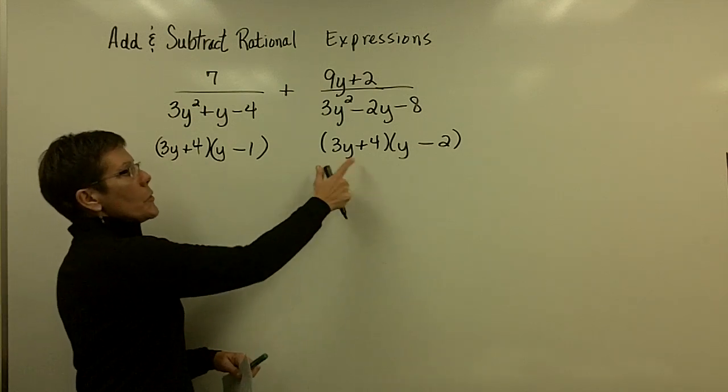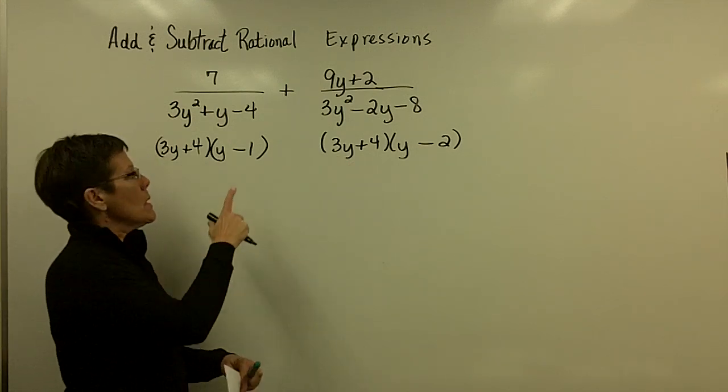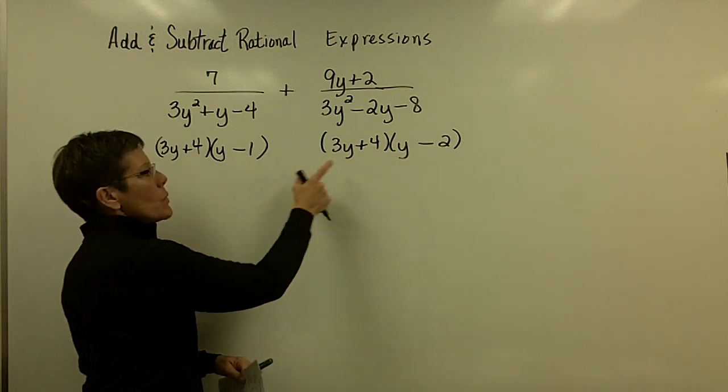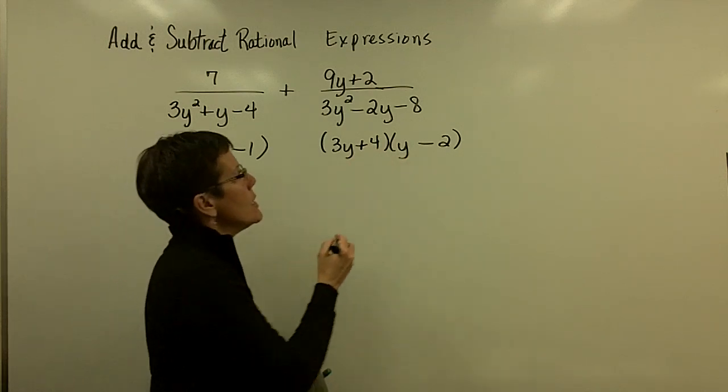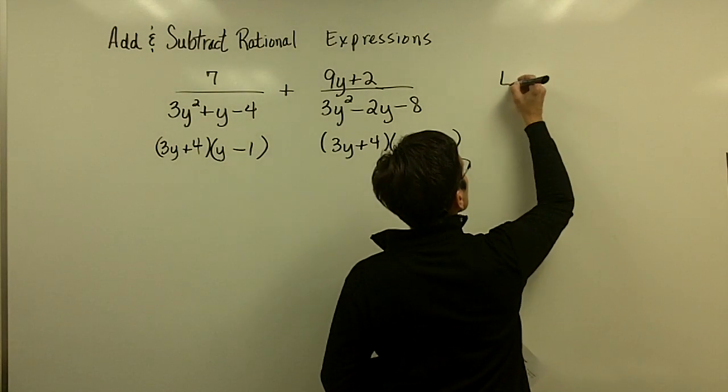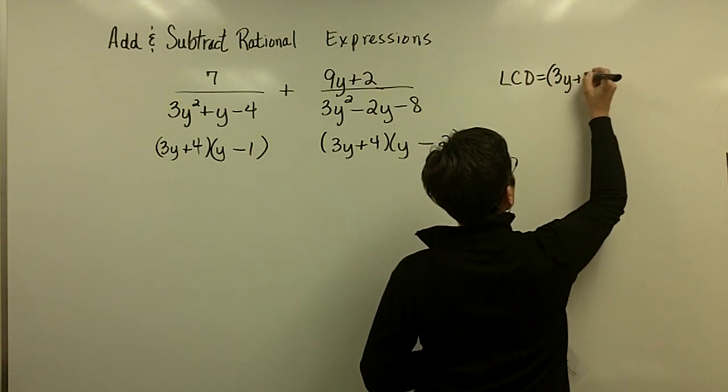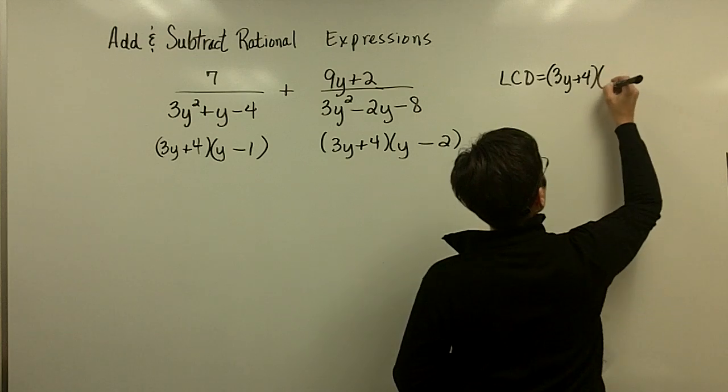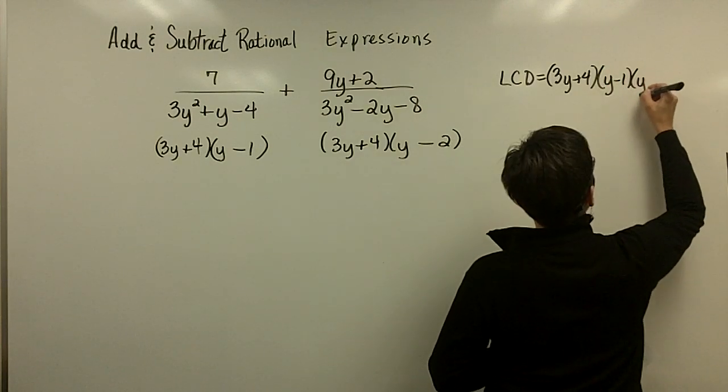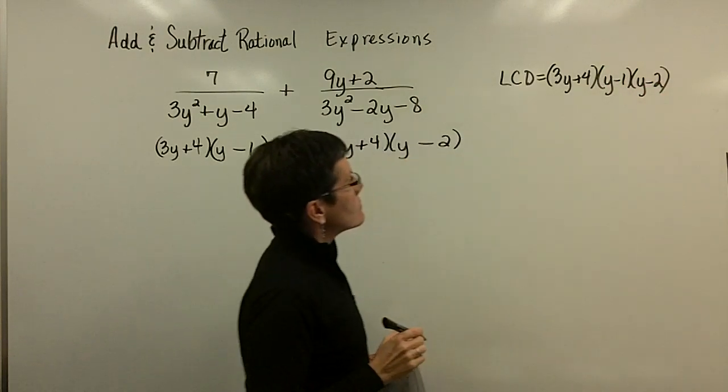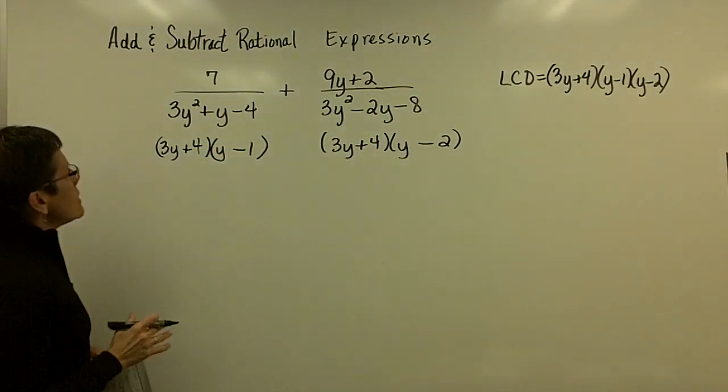So, 3y+4 is common in each of them. But, this one has a y-2 and this one, y-1, I'm sorry, and that one has a y-2. So, I need those three things in my LCD. I need the 3y+4, but I need the y-1 and the y-2. I need both of those.